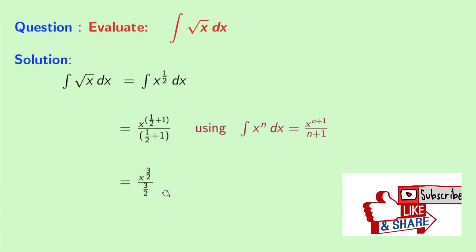We all know that reciprocal of 3 by 2 is equal to 2 by 3, so we will have 2 by 3 times x power 3 by 2. Now this is our expected answer.